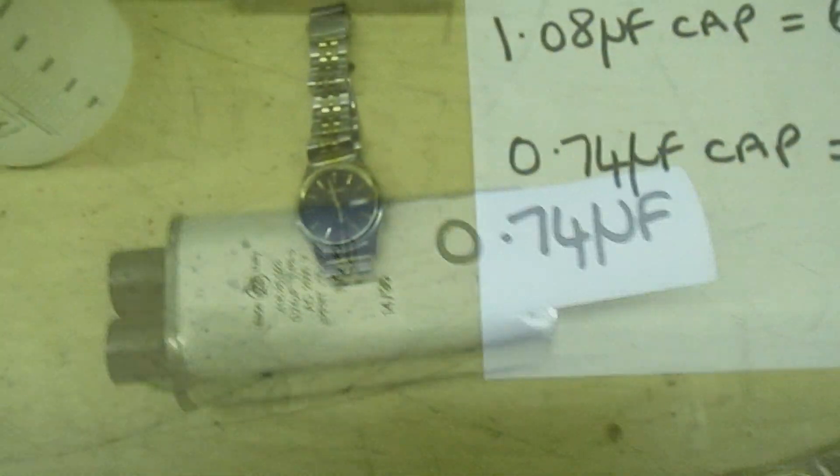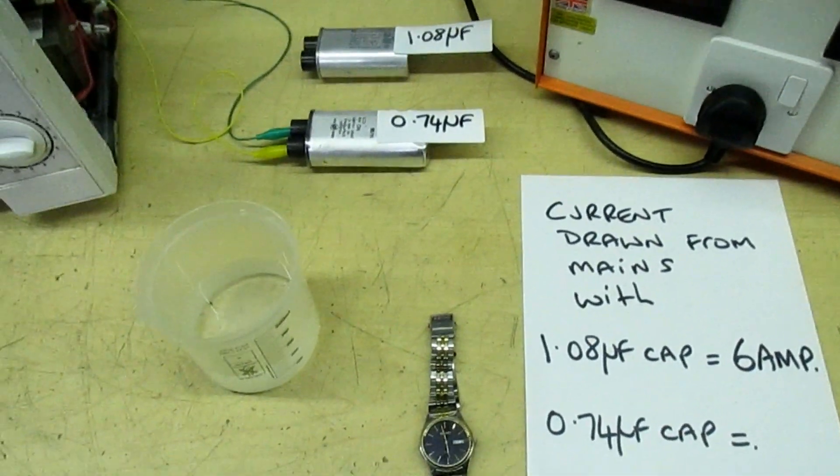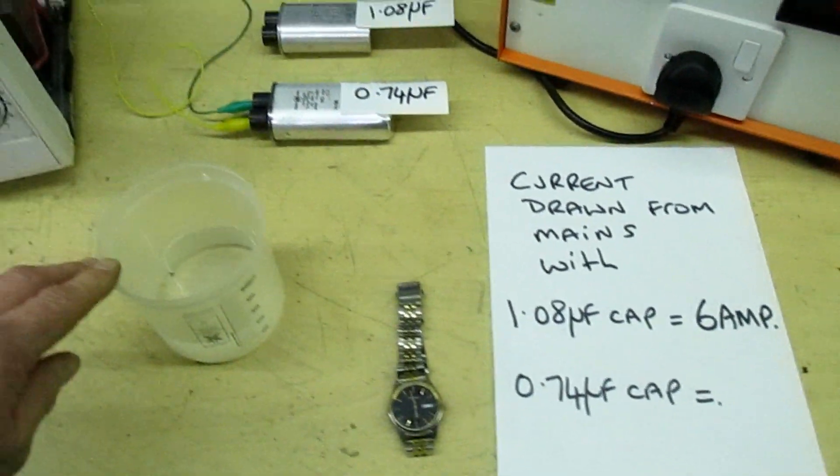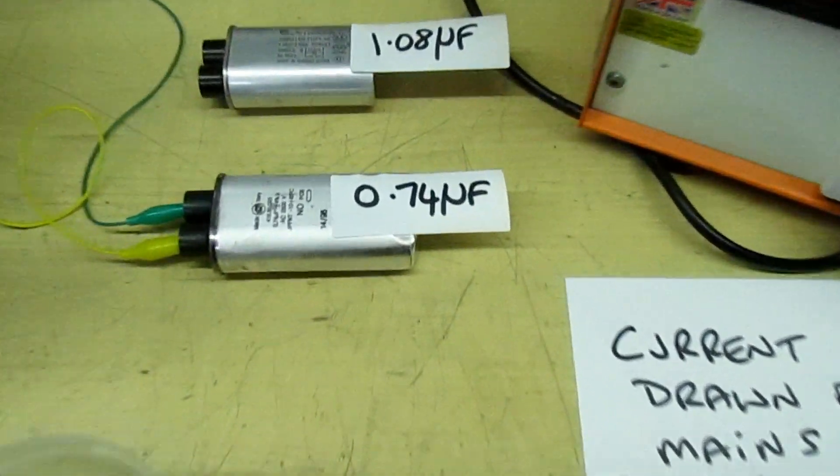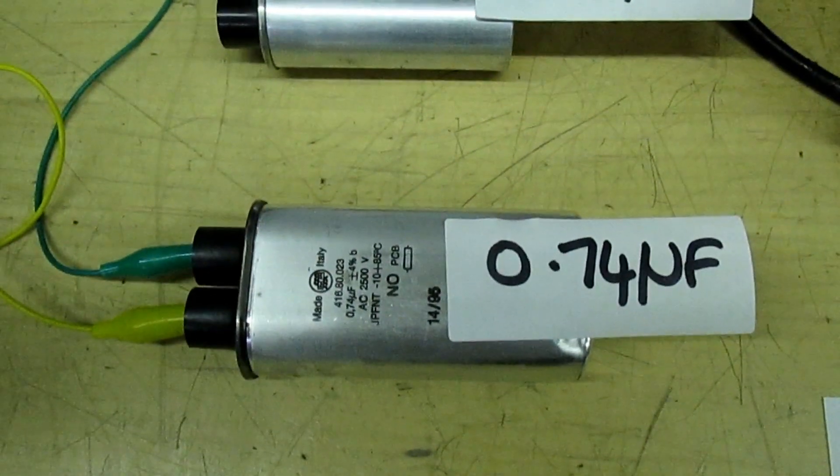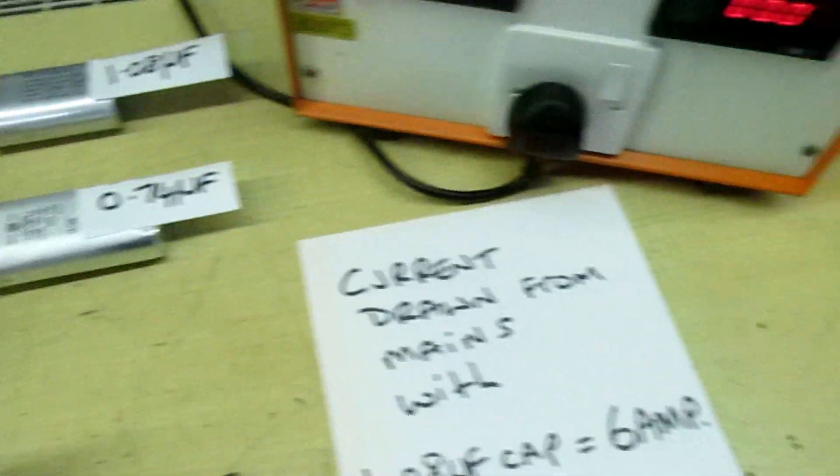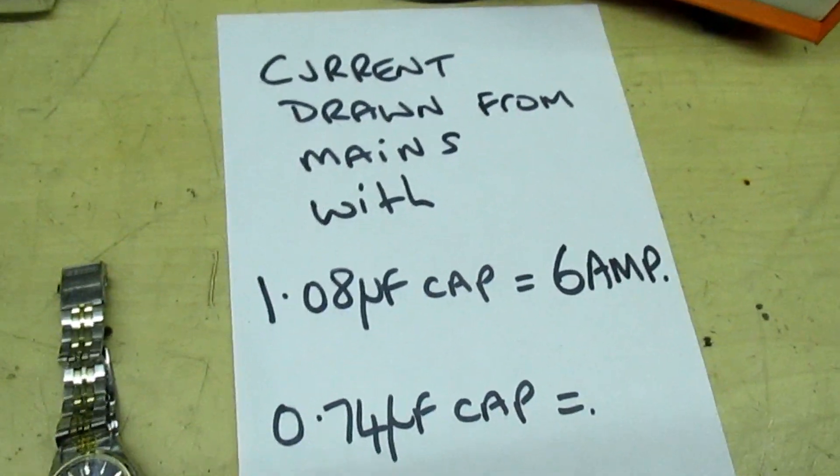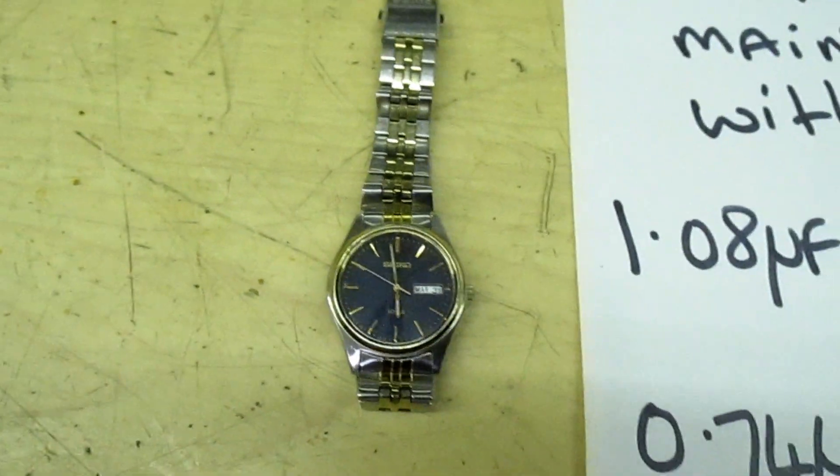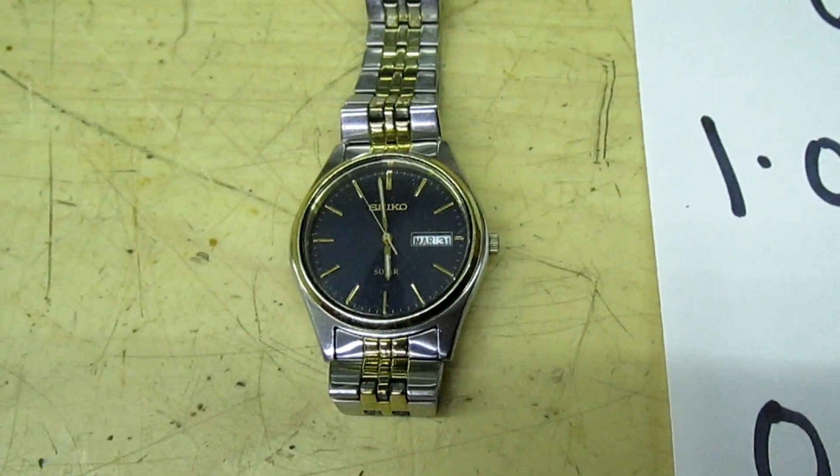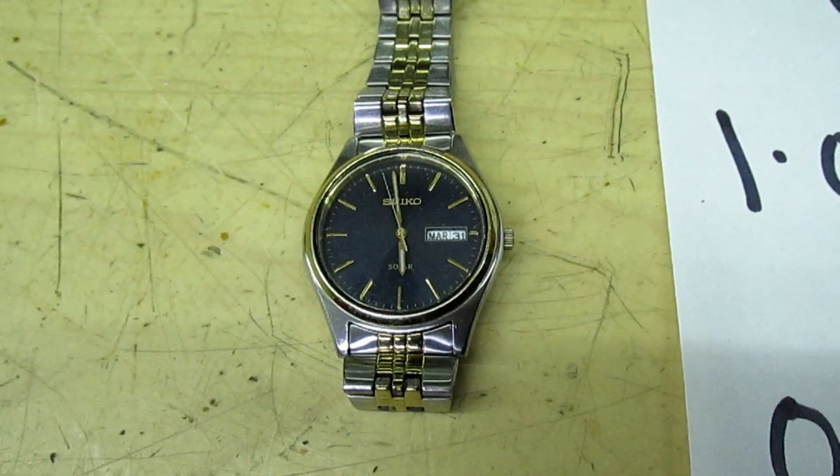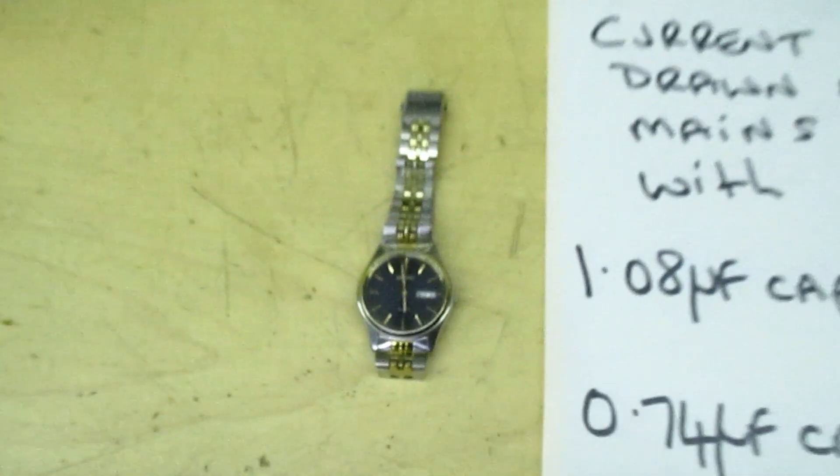Right, so here we go again. I've got this second beaker of water. This time I've swapped the cap from a 1.08 to a 0.74, and we're going to put that in there. I'll do the same test. As soon as that gets to 60 seconds, I'll turn the microwave on. Three, two, one, go. There we go.